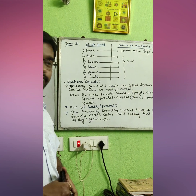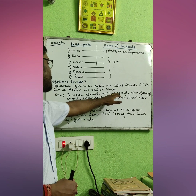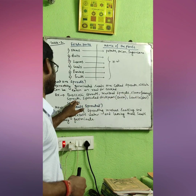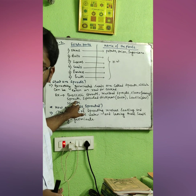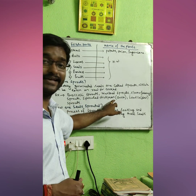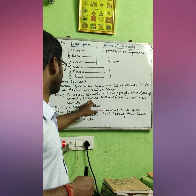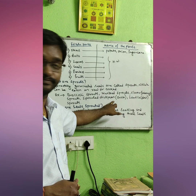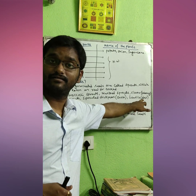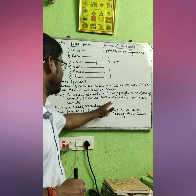Examples of sprouts include broccoli sprouts, mustard sprouts, clover sprouts — clover is called 'lobong' in Bengali — sprouted chickpeas called 'chola', which are very well known, lentil sprouts, and moong dal sprouts. These sprouts can be eaten raw or cooked.